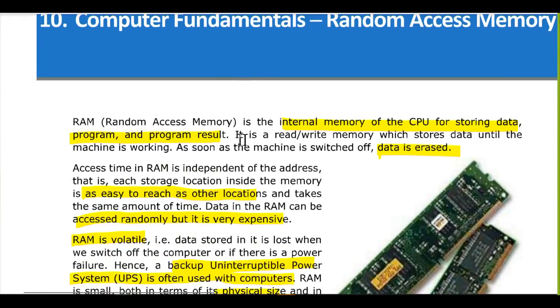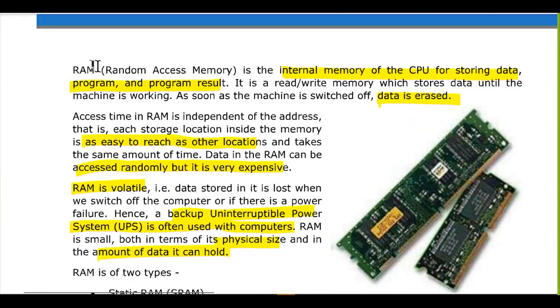We already discussed the types of memory, and we said that RAM is one of the internal memory that is used in a computer. So we are saying that it is used for storing data, programs, and results of a given program. It is a read-write memory which stores data until the machine is working.